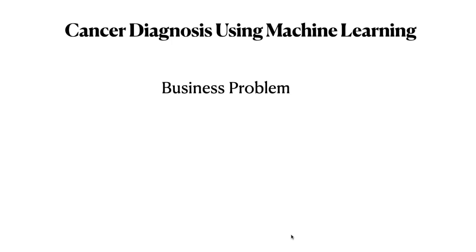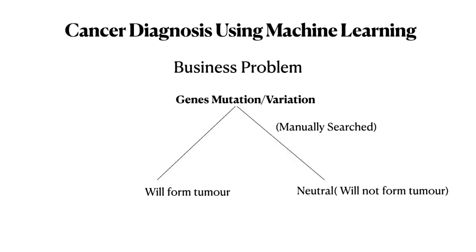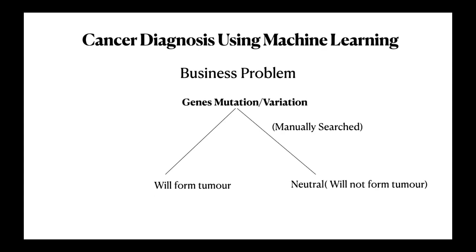But this is only partially happening due to the huge amount of manual work still required. Once sequenced, a cancer tumor can have thousands of genetic mutations. But the challenge is distinguishing the mutations that contribute to tumor growth from neutral mutations which do not contribute to tumor growth.